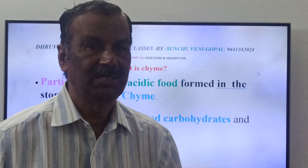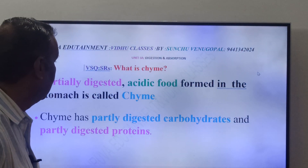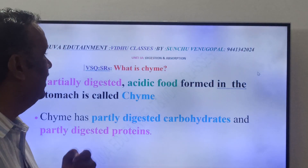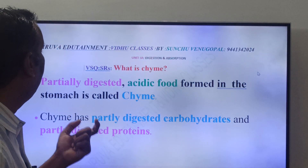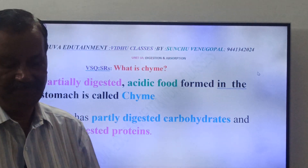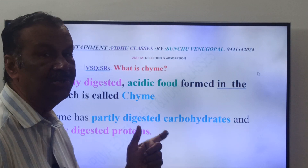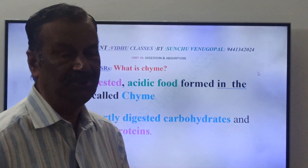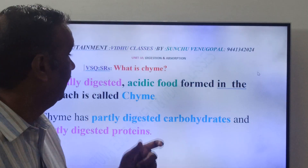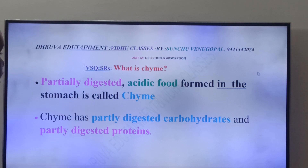Now come to our answer, friends. What is Chyme? Partially digested acidic food formed in the stomach is called Chyme. Friends, Chyme is partially digested food. It is acidic food present in the stomach.